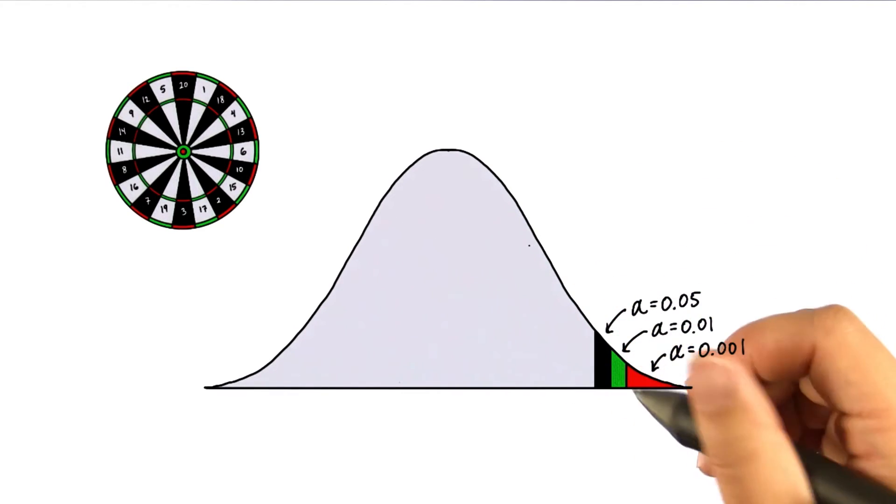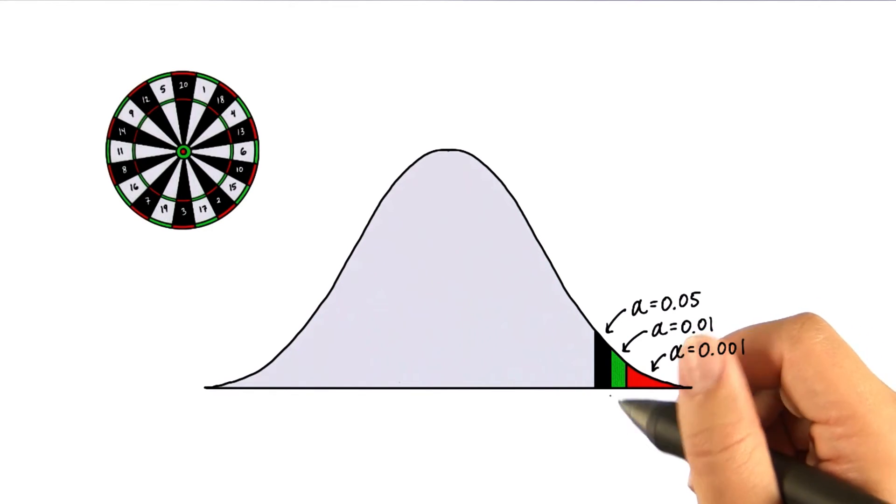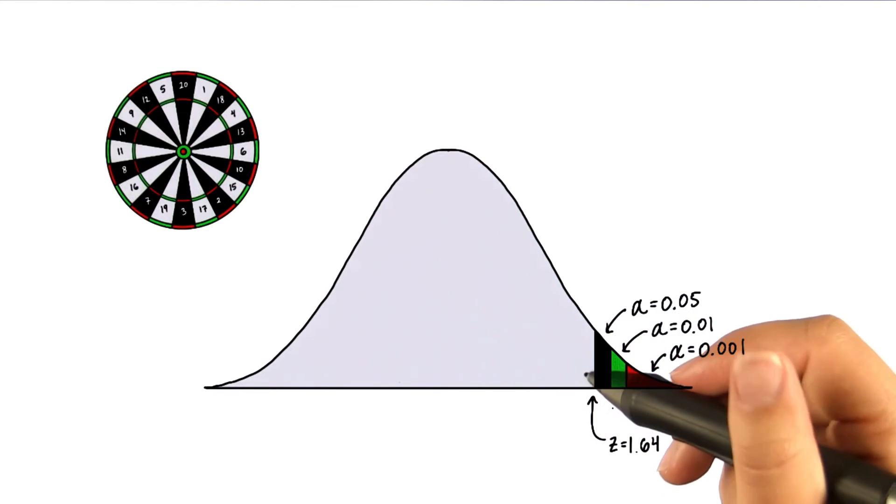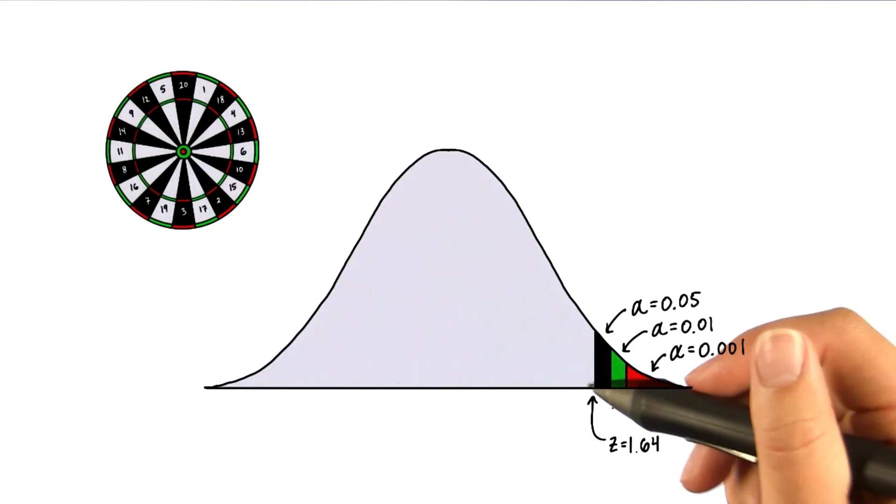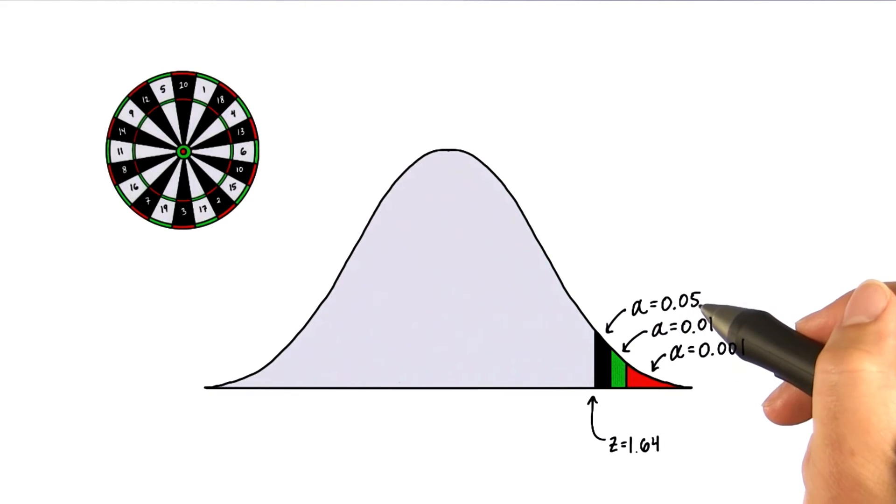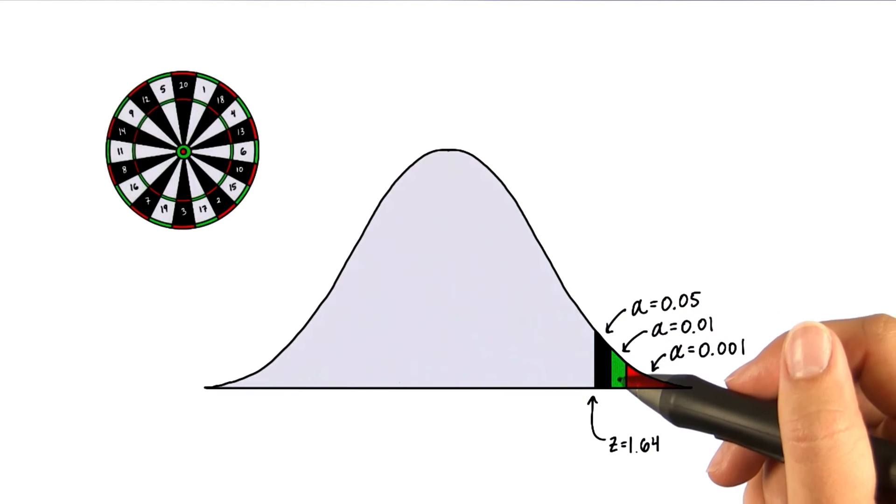But if a mean lands beyond a z-score of 1.64, the probability of getting this mean is less than 0.05, the alpha level. And it's not likely to have occurred by chance.